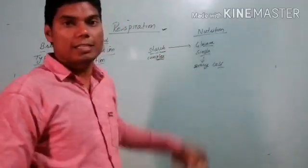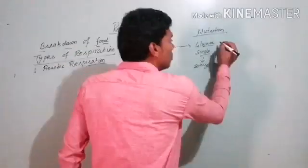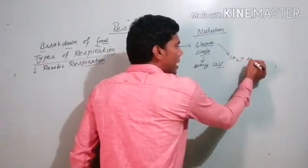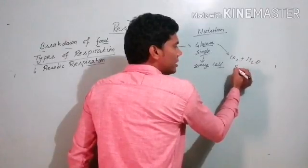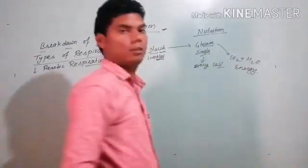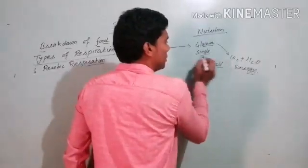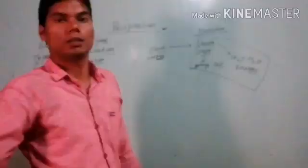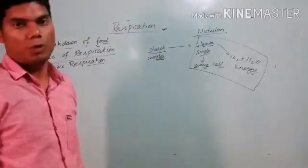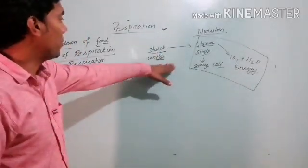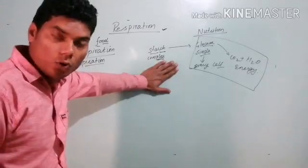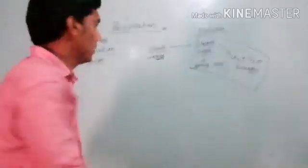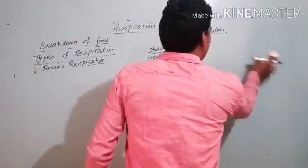Now this glucose in the cell has to be completely broken down into carbon dioxide and water, and this releases energy. This is the respiration. This is the difference between breakdown of food during digestion and respiration. So let's start with the first type of respiration.